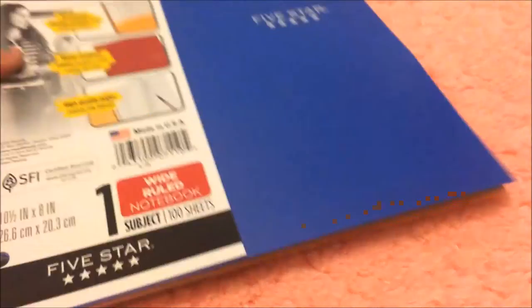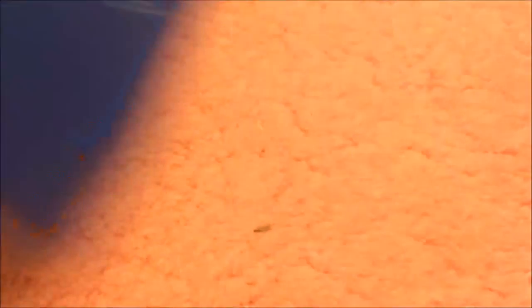Next I have a one-subject notebook from Five Star, and in the front has a little pocket. This is wide ruled.